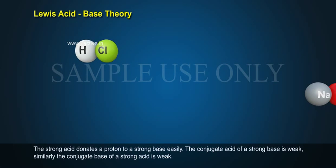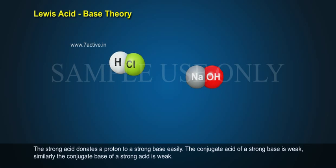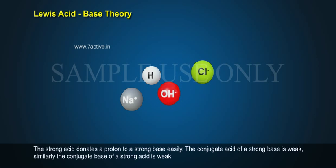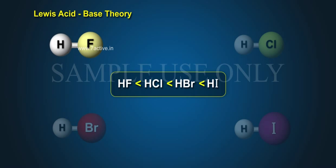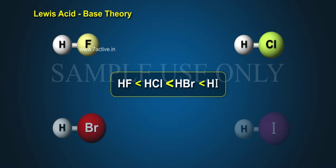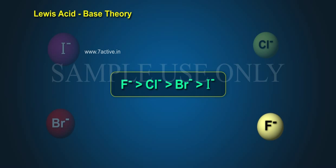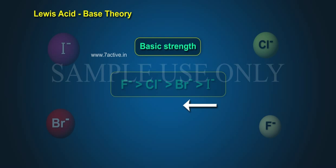The strong acid donates a proton to a strong base easily. The conjugate acid of a strong base is weak. Similarly, the conjugate base of a strong acid is weak. HF < HCl < HBr < HI — acidic strength increases. F⁻ > Cl⁻ > Br⁻ > I⁻ — basic strength decreases.